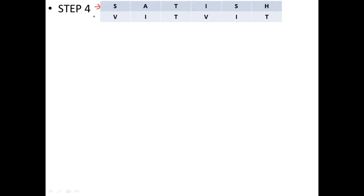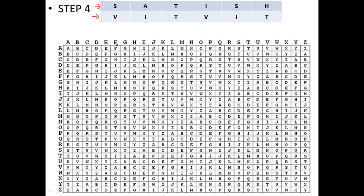After step 3 we move to step 4. We take the plaintext and the expanded key from the previous step. Now we have to use this big 26×26 table — it contains 26 rows and 26 columns. The top row is meant for plaintext characters, and the rows on the left side are used for key values.